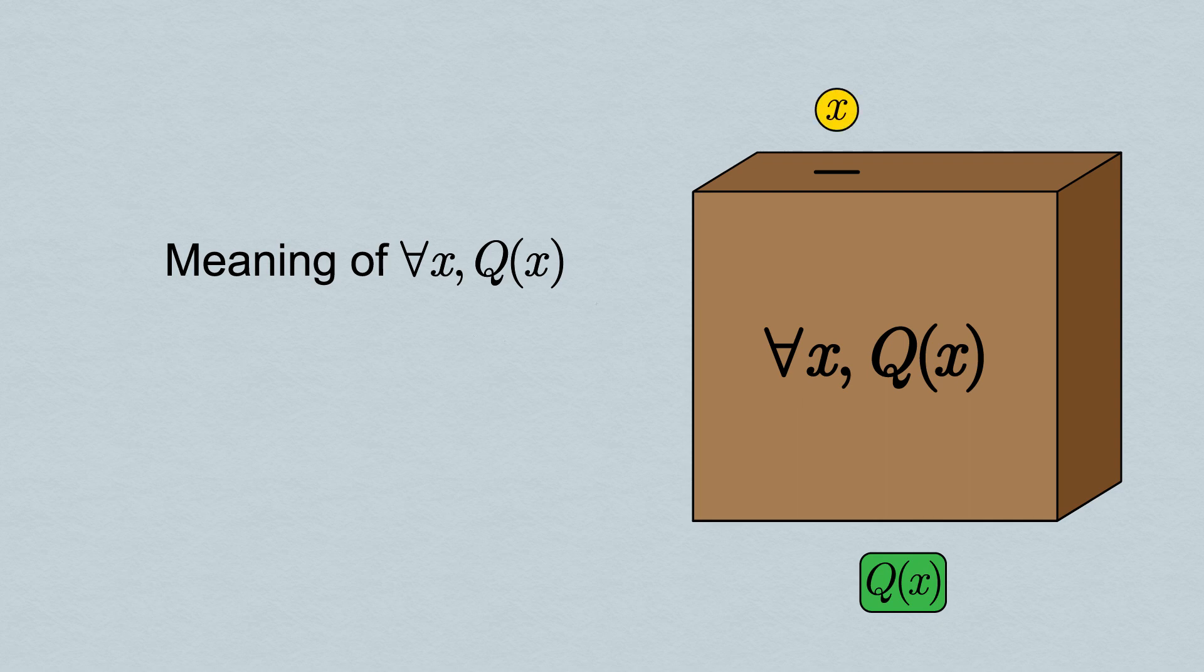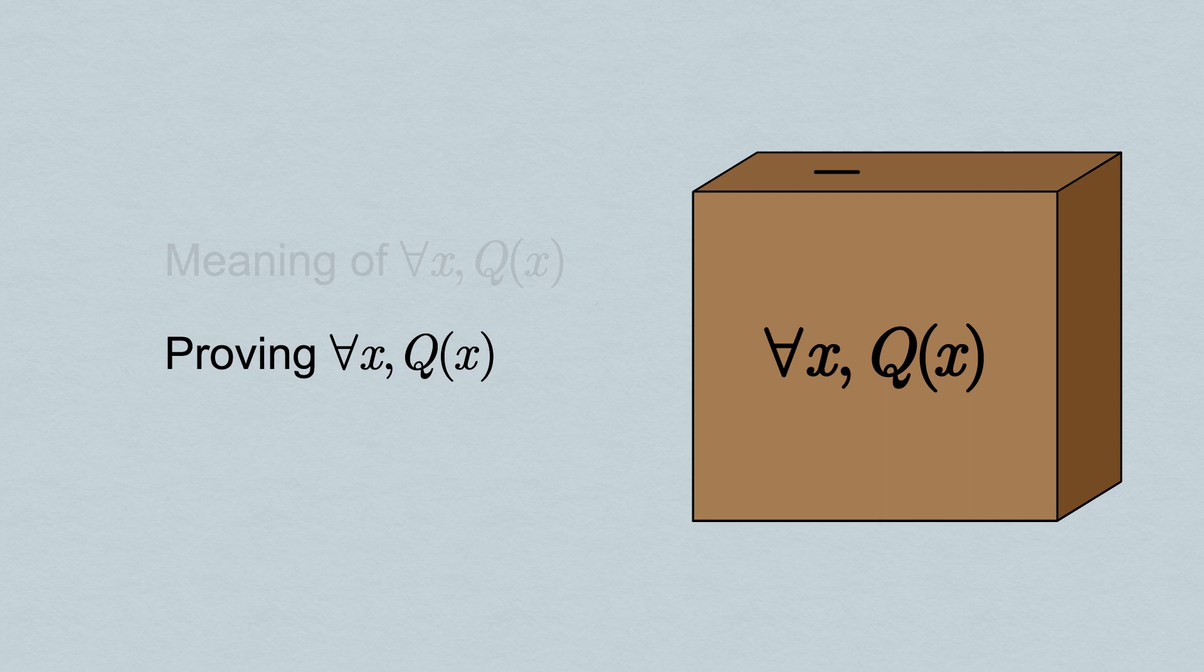Again, its input is an object, a value of x, and its output is the verified statement Q(x). The way that we prove such a statement simply puts into words what we did earlier with our set of shapes. We need to take whatever value of x is given to us, and deduce that the statement Q(x) is true.